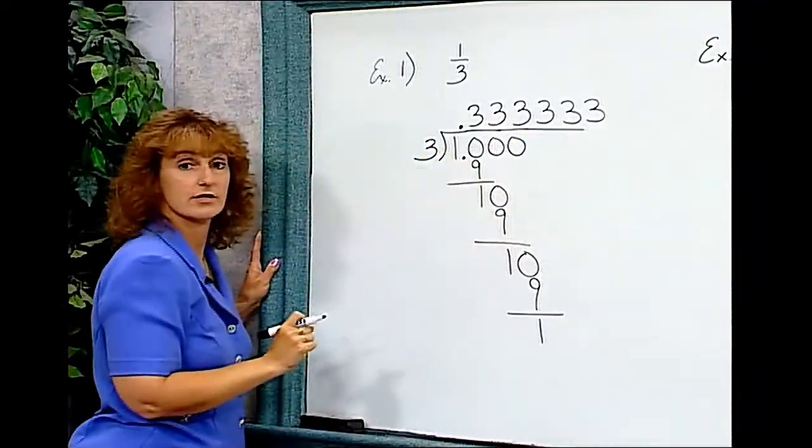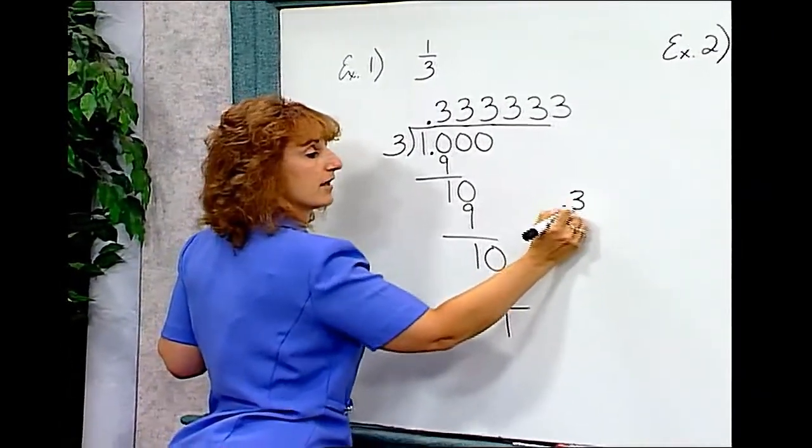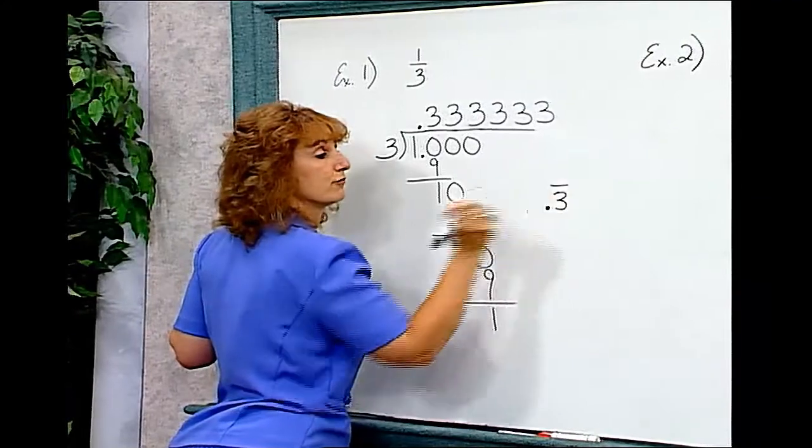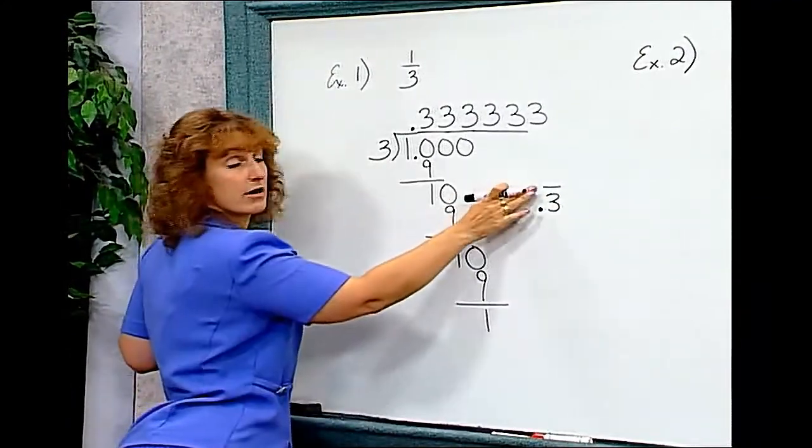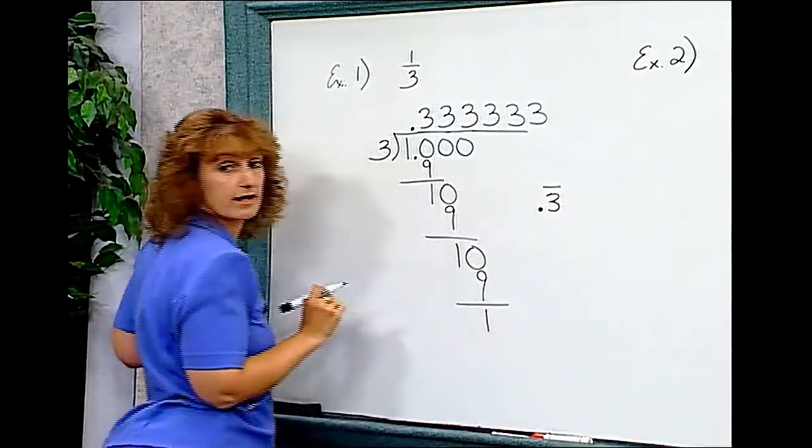You can write this answer in a number of ways. One way is to write .3 repeating. That bar signifies that that three repeats over and over and over again.